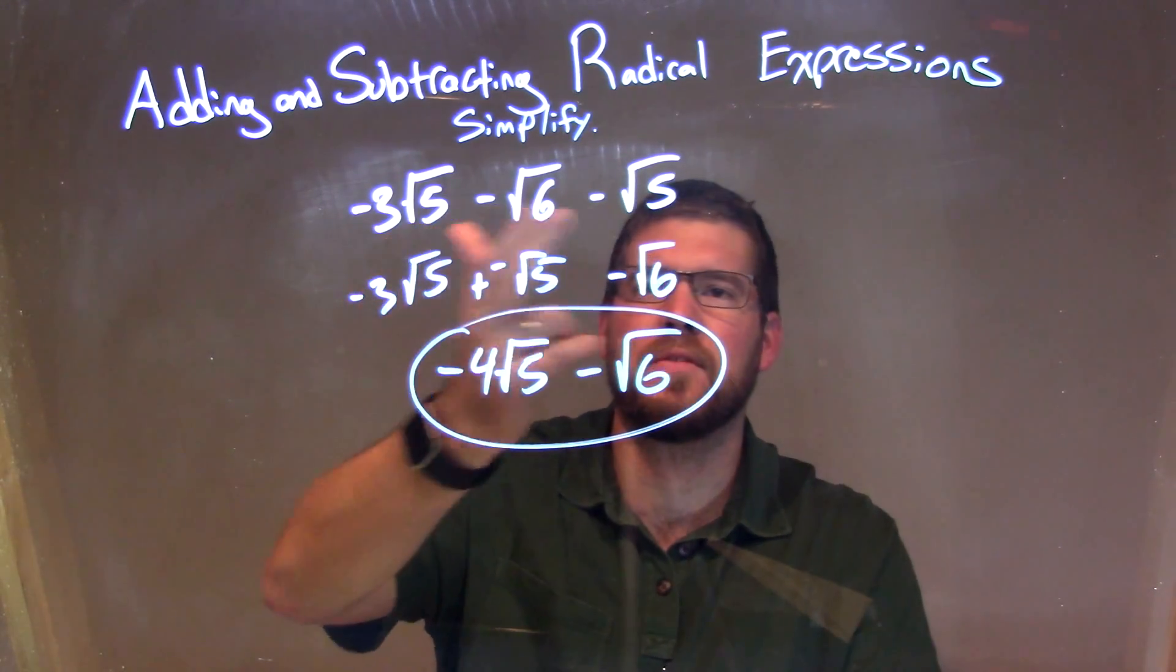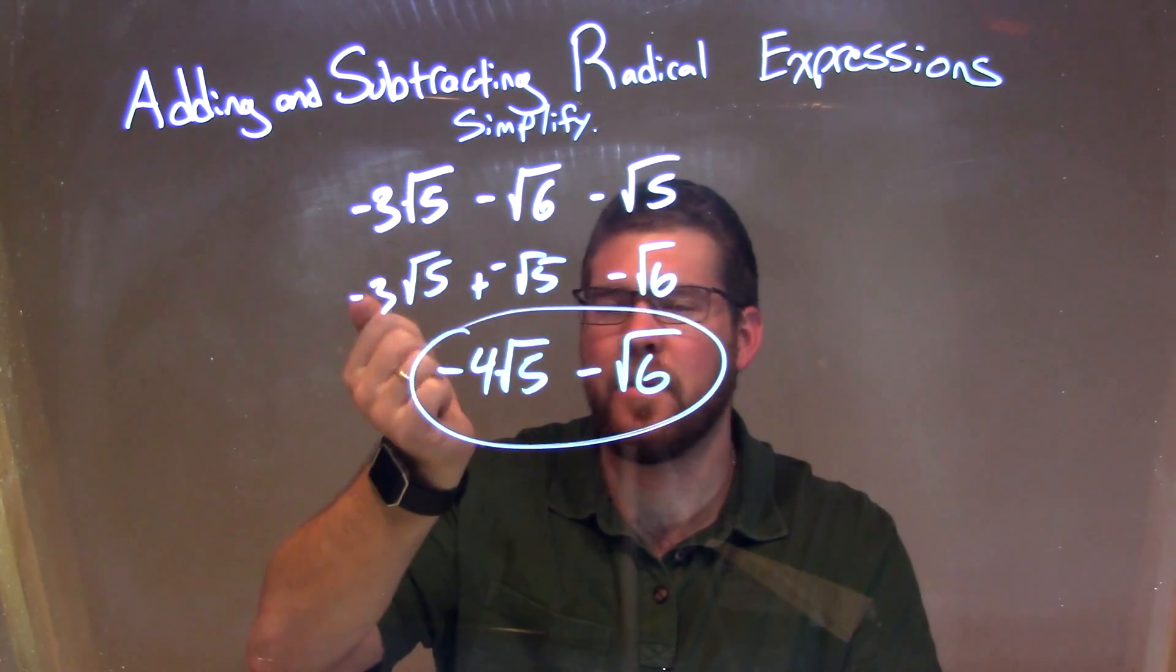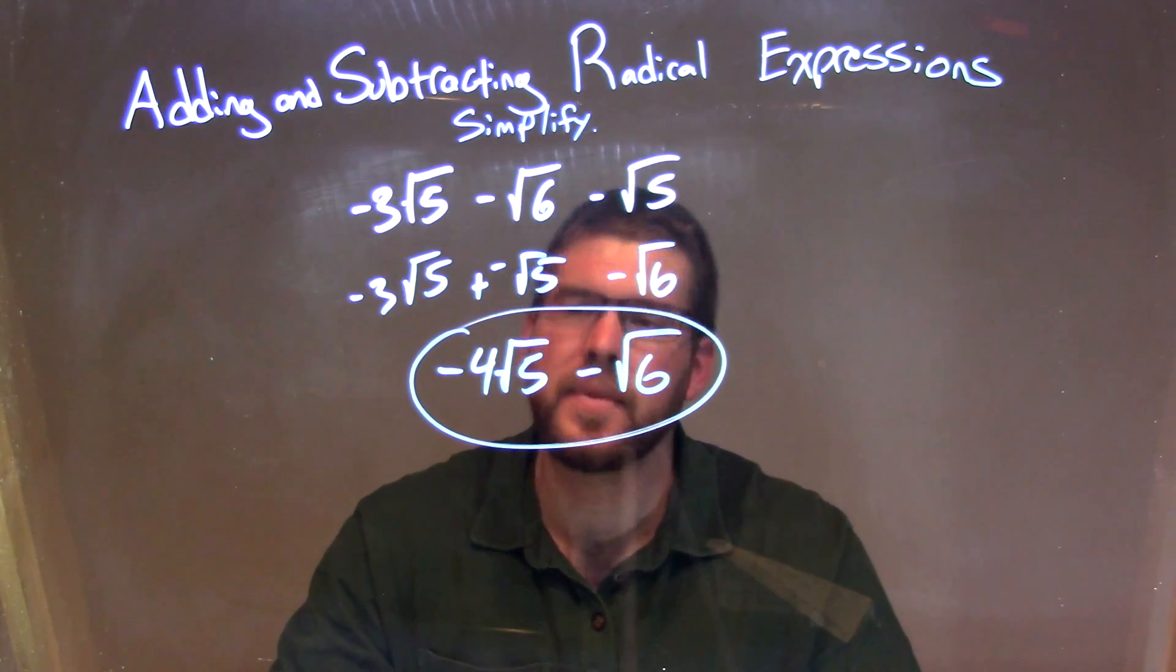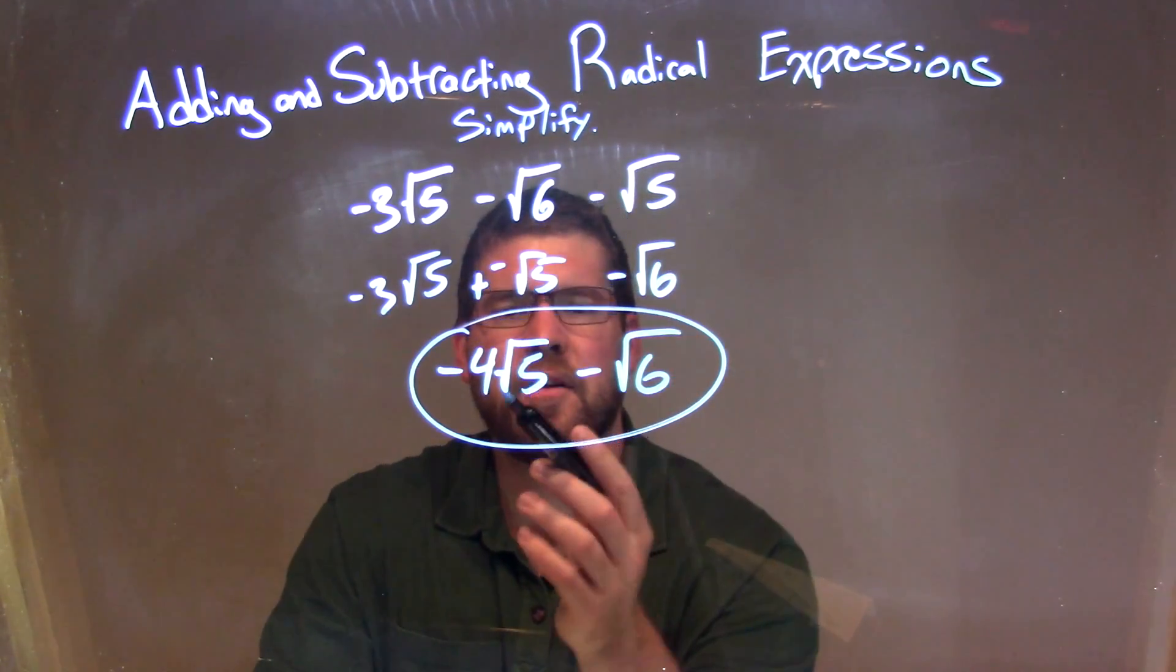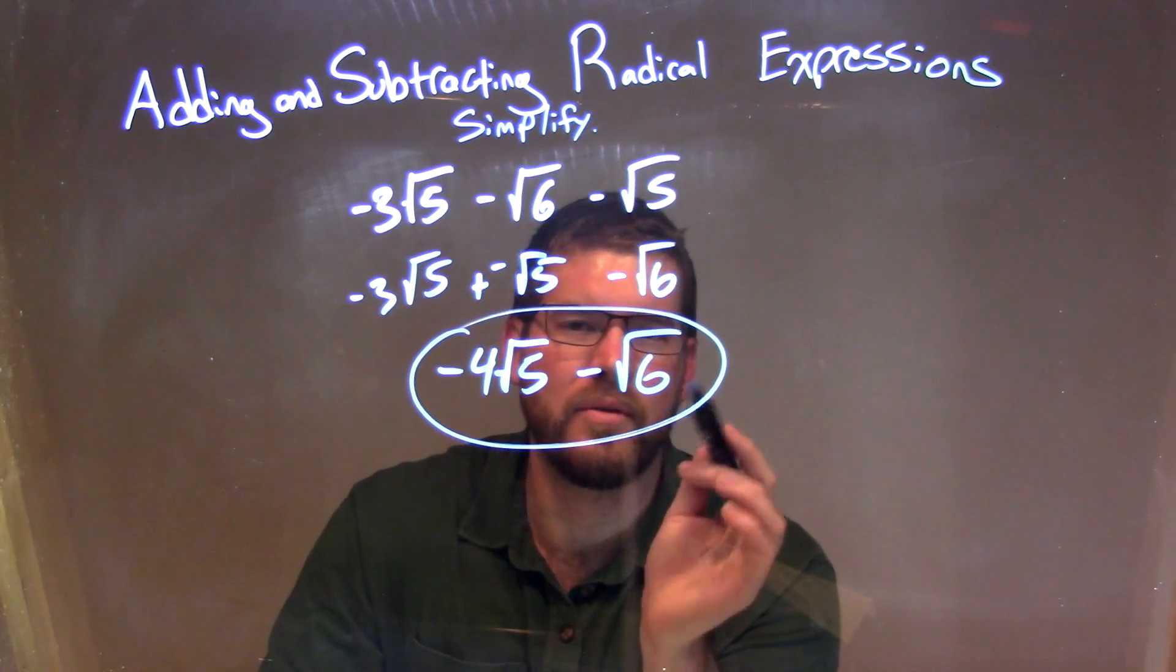But anyway, we have to combine the ones that have the same square roots. Square root of 6 can't simplify, and the square root of 5 can't as well. So we just combine them to get our final answer here of negative 4 square root of 5 minus the square root of 6.